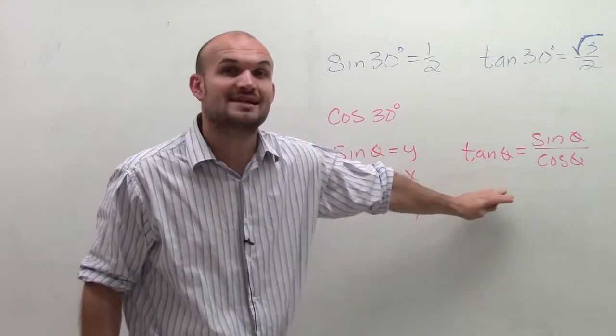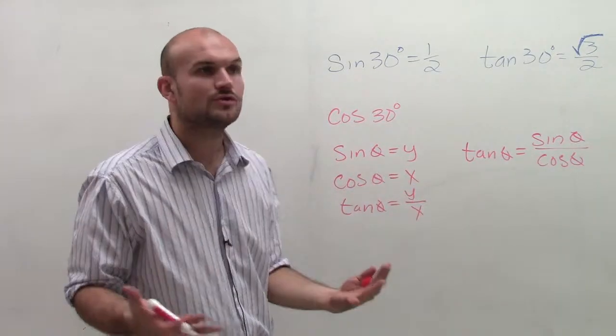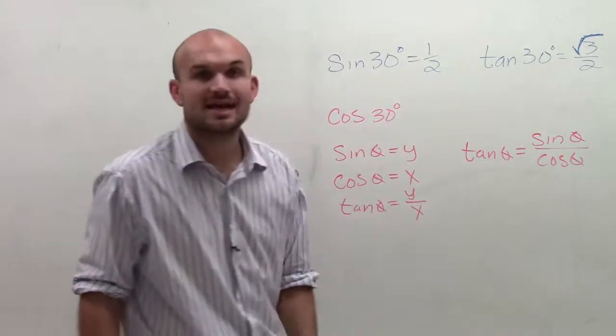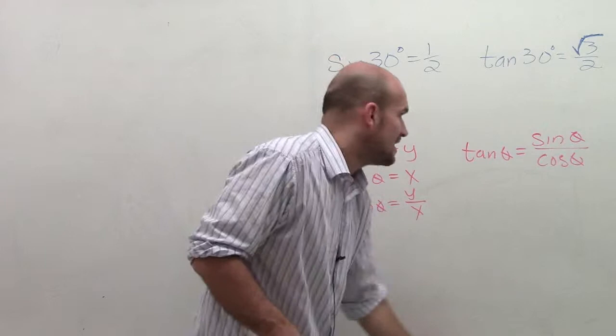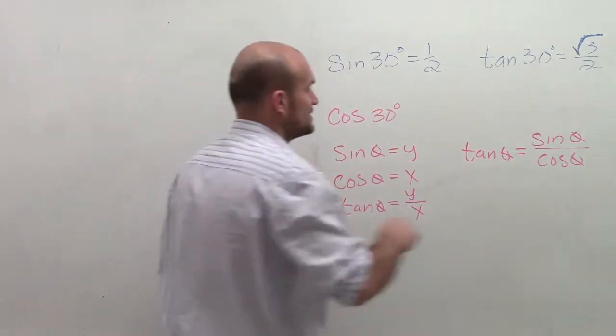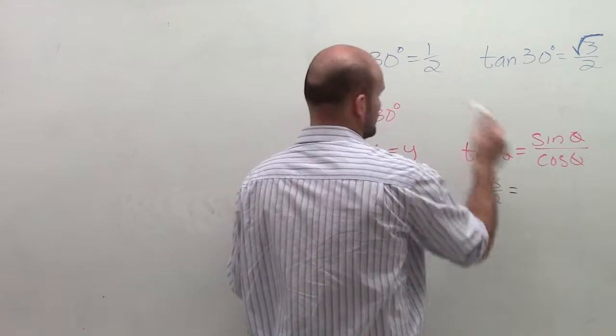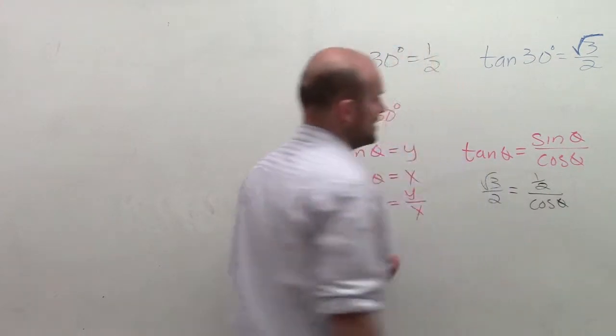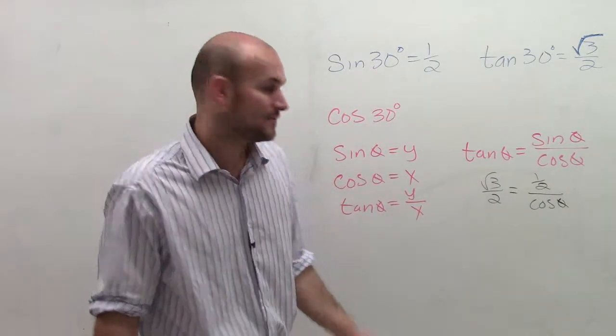So therefore, do I have two of these solutions? Yeah, I know what sine of 30 degrees and tangent of 30 degrees is. So what I'm going to do is simply replace and then solve for the cosine of 30 degrees. So the tangent is square root of 3 over 2 equals the sine, which is 1/2, divided by cosine of theta. So now I've got this equation that I've got to solve for cosine.